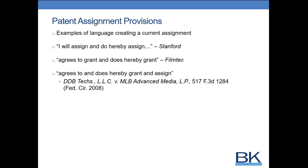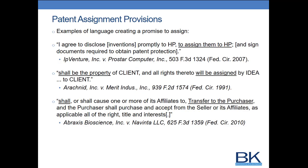Moving on to promise-to-assign language — these are not present or automatic assignments effective at execution, but rather future promises. In IP Venture, the Federal Circuit found language stating 'I agree to disclose promptly to HP... to assign them to HP... in signed documents required to obtain patent protection' was not a present assignment but a future promise. Similarly in Arcanid, language stating rights 'shall be the property of the client and will be assigned' was merely a promise to assign in the future, not an automatic assignment. Without a separate assignment agreement, Arcanid did not own title to the contractor's invention.